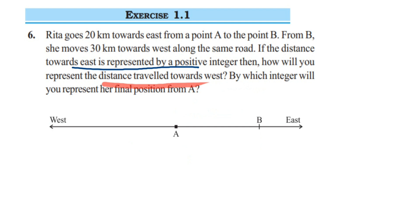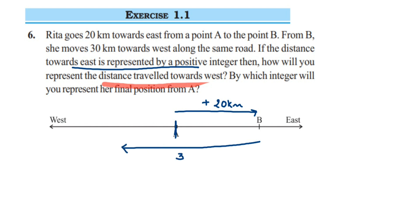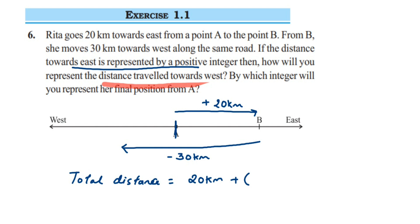Now let us answer the second part of the question: by which integer will you represent her final position? She started at point A and went to point B towards the east side — 20 km, which will be positive. From point B, she went 30 km towards the west side, so that is negative because she went in the opposite direction. The total distance will be equal to: she first went 20 km east, then 30 km west, so it is 20 plus (negative 30), that is 20 minus 30.